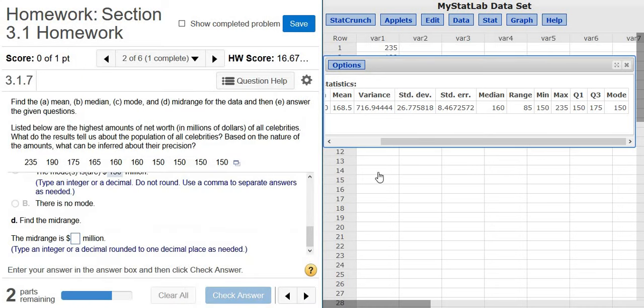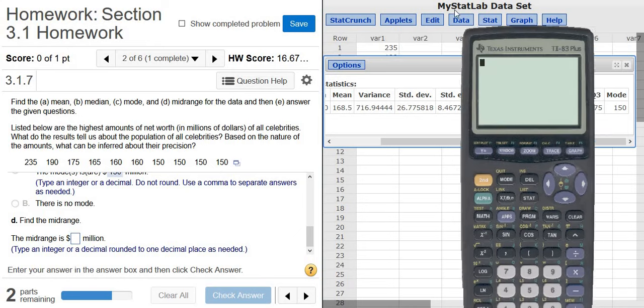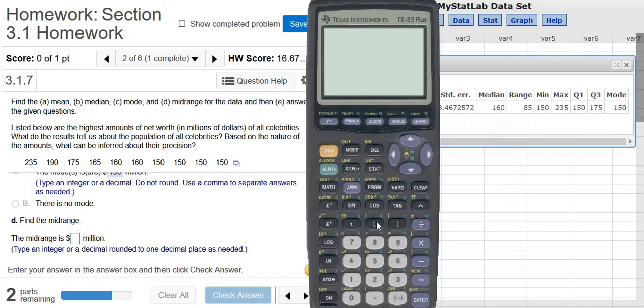And then it wants the mid-range. Now, the mid-range is not in StatCrunch. To find the mid-range, you have to add up the max and the min and divide by 2. So let's do it in the calculator. It's parentheses, the max 235, plus the min, and then parentheses.